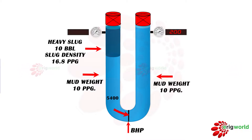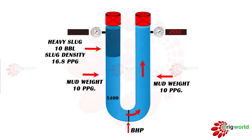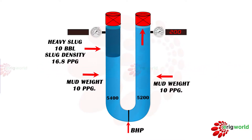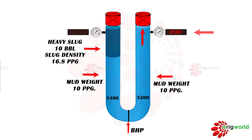Since the drill string side has a heavy slug, it will exert more hydrostatic pressure on the drill string side. Due to this, a back pressure on the lighter side can be seen on the casing gauge, which is a differential pressure between the drill pipe hydrostatic pressure and annulus side hydrostatic pressure of 200 psi.